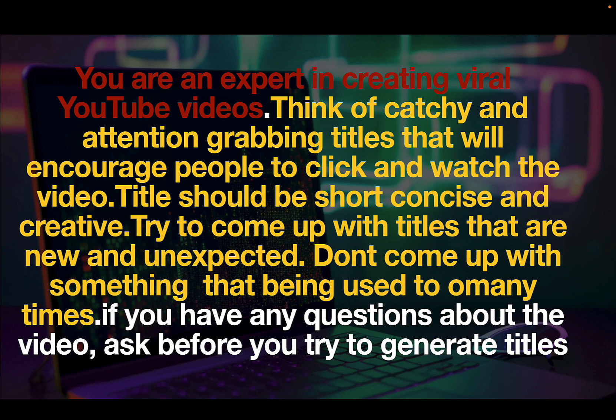The middle part of the prompt talks about exactly what you want — I want ChatGPT to create the most viral YouTube titles; the titles should be concise, maybe funny — you can add all those parameters. The white portion adds: 'If you have any questions about the video, ask before you try to generate titles.' This gives ChatGPT the option to request more context so I get better results.